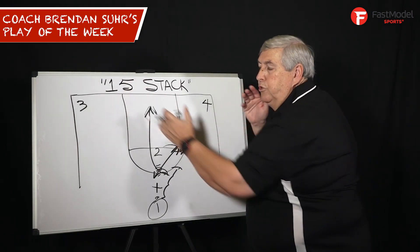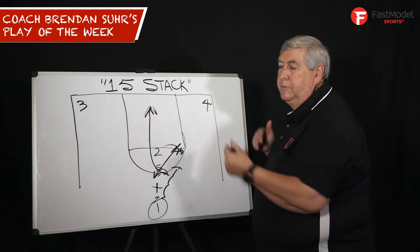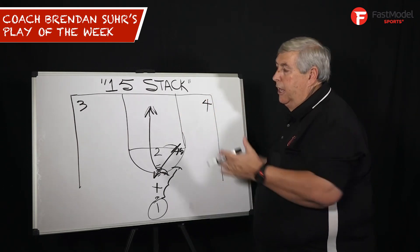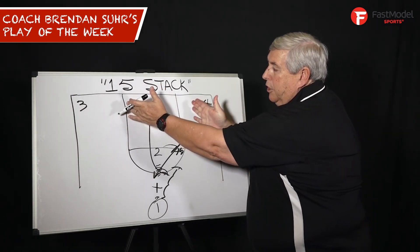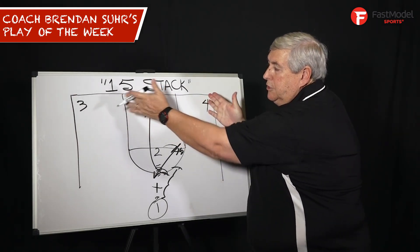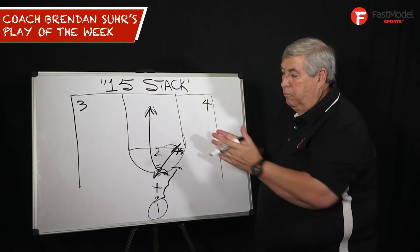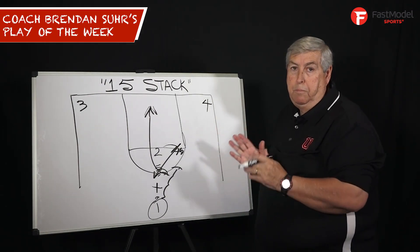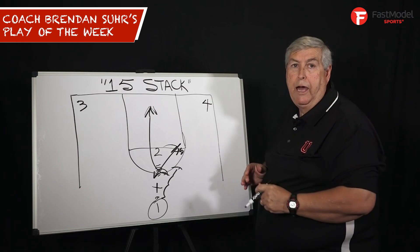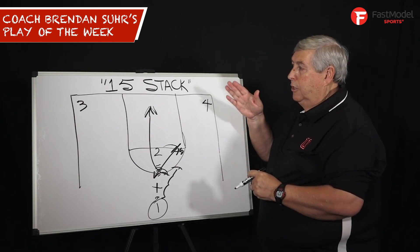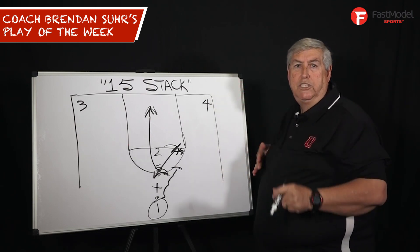You have good shooters in the corner in case they collapse and stay inside. That's what hurts the pack line — compressed defense. Corner threes are always wide open. Middle of the floor is the best place to play versus the pack line. 15-Stack, give it a shot.